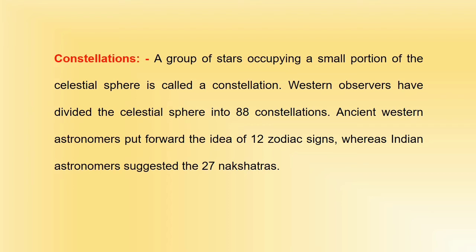A group of stars occupying a small portion of the celestial sphere is called a constellation. Western observers have divided the celestial sphere into 88 constellations. Ancient Western astronomers put forward the idea of 12 zodiac signs, whereas Indian astronomers suggest the 27 nakshatras.